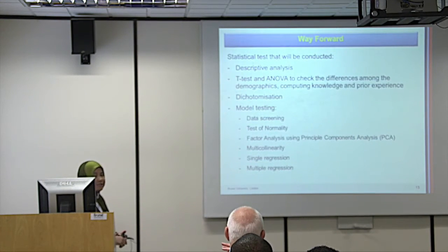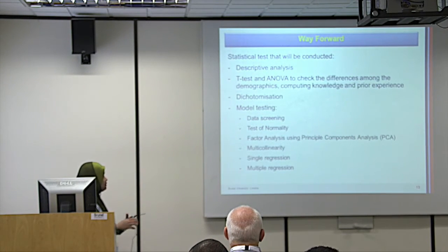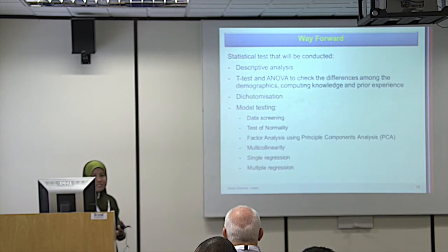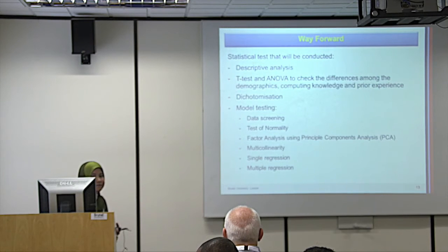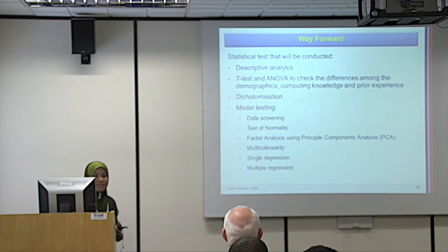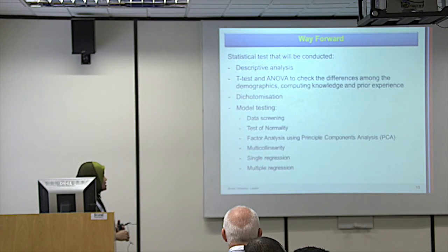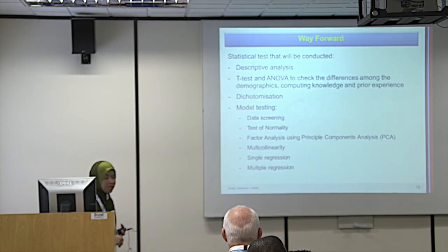For my way forward: I will conduct descriptive analysis, t-test, and ANOVA to check differences among demographic, computing knowledge, and prior experience variables. I will also perform dichotomisation and finally test the model. Before that, I need to complete data screening, a test of normality, and factor analysis using principal component analysis to check for multicollinearity, as I intend to conduct single and multiple regression. Thank you.